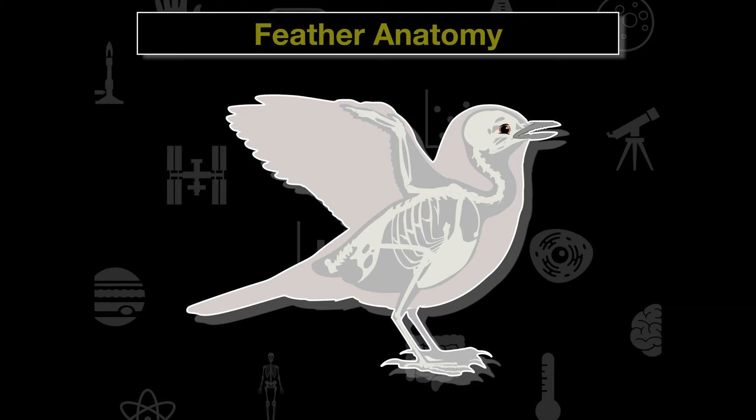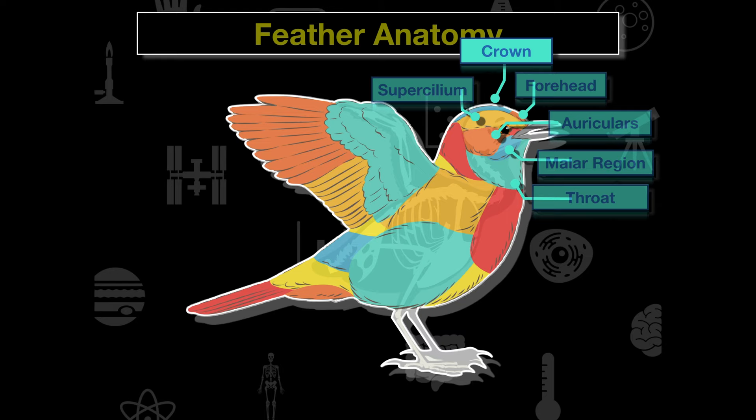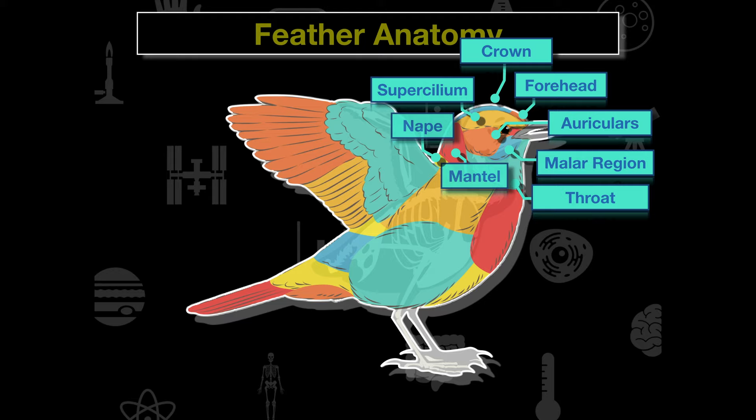There are three sets of anatomy we'll go through. The most distinguishing feature among birds are the feathers and their colors. On the head of the bird we see the crown, forehead, supercilium, auriculars, malar region, and throat. Each group of feathers has different color patterns depending on the species, and we use that to identify birds.